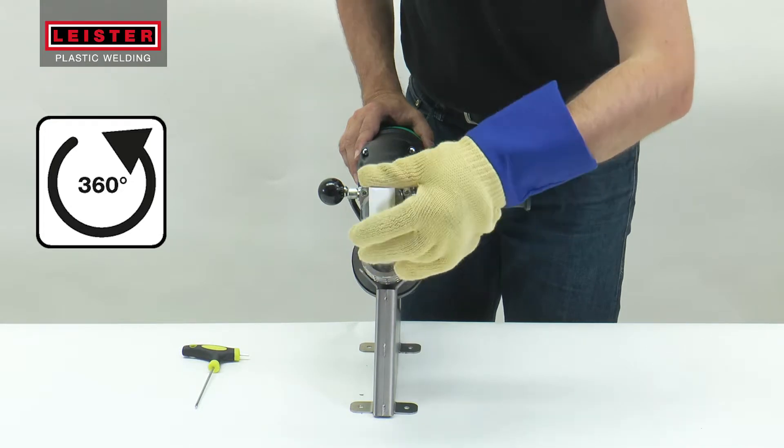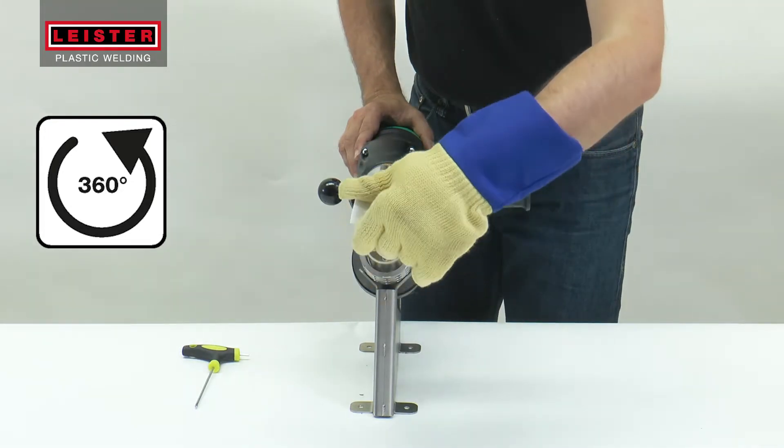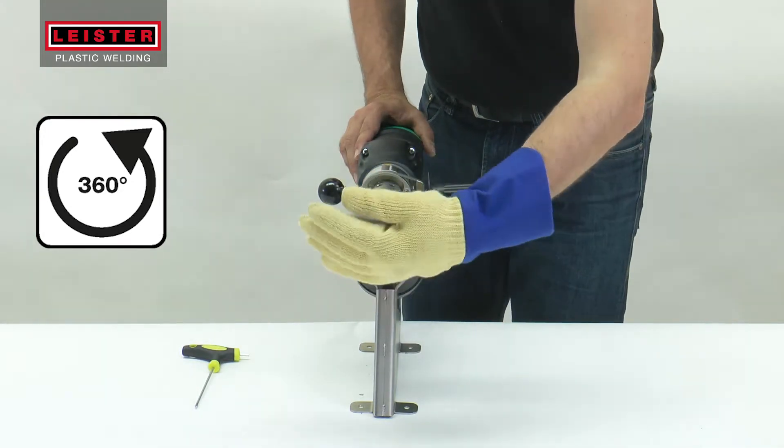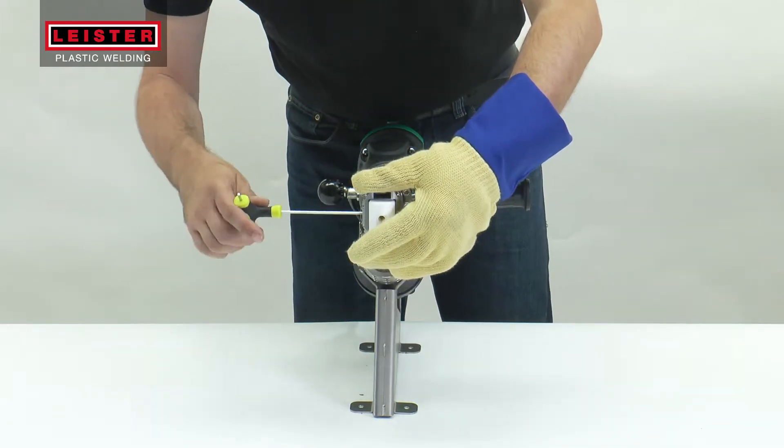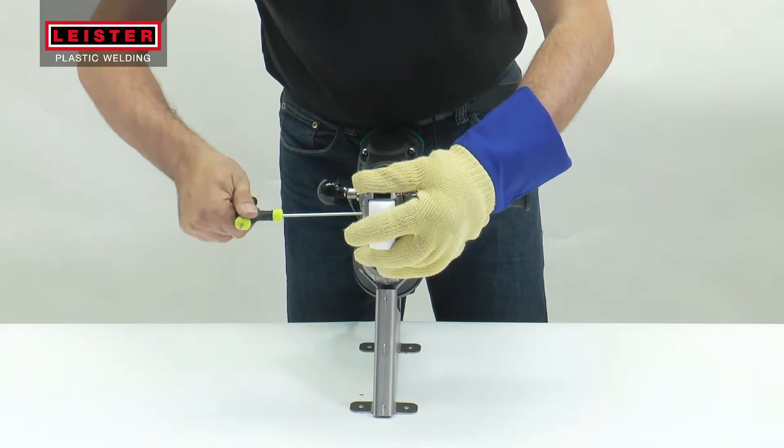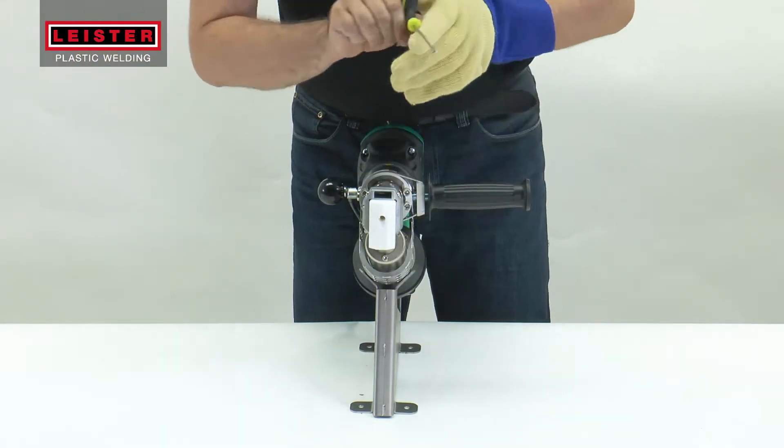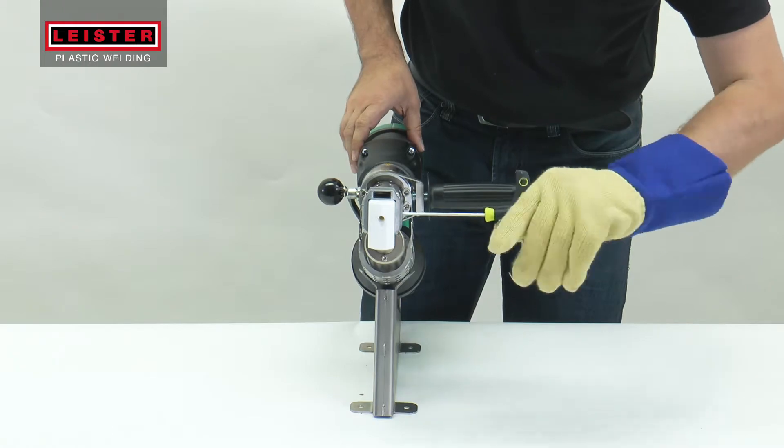The shoe can rotate 360 degrees and can be locked at any desired position. Fix the shoe position by turning the set screws on both sides of the shoe until tight.